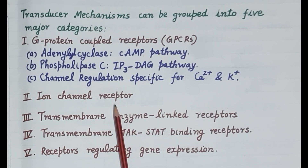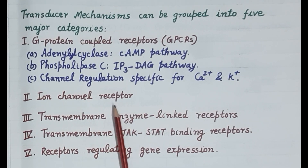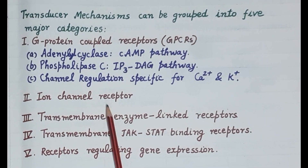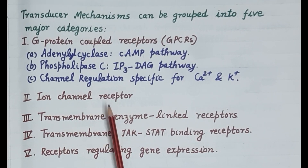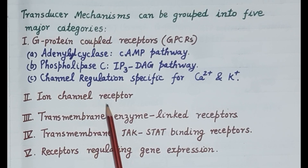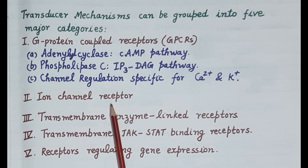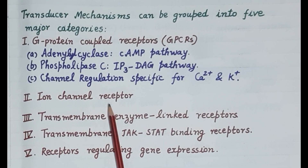The second type of transducer mechanism is ion channel receptors, also called ligand-gated ion channels. Here, ion channels are incorporated within the receptors. These ion channels are not regulated by G-proteins; instead, ions such as sodium, potassium, calcium, and chloride flow across them. Binding of a ligand to these receptors induces opening or closing of the channels — for example, nicotinic cholinergic receptors are ligand-gated ion channels.